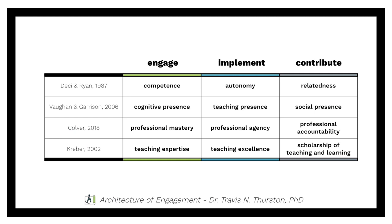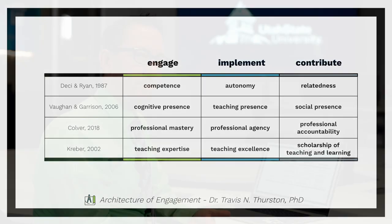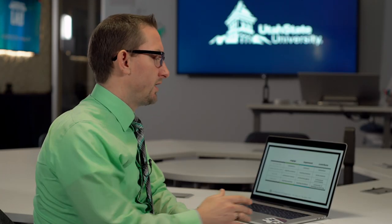So there are a number of theories that we're aligning into these three terms. Deci and Ryan's self-determination theory. Vaughan and Garrison's community of inquiry framework. And then Culver approaches this in terms of professional mastery, professional agency, and professional accountability. And Kreber, in her foundational piece, talks about this in terms of teaching expertise, teaching excellence, and the scholarship of teaching and learning. So all of these align into these three key terms: engage, implement, and contribute — but they don't sit independent of one another.